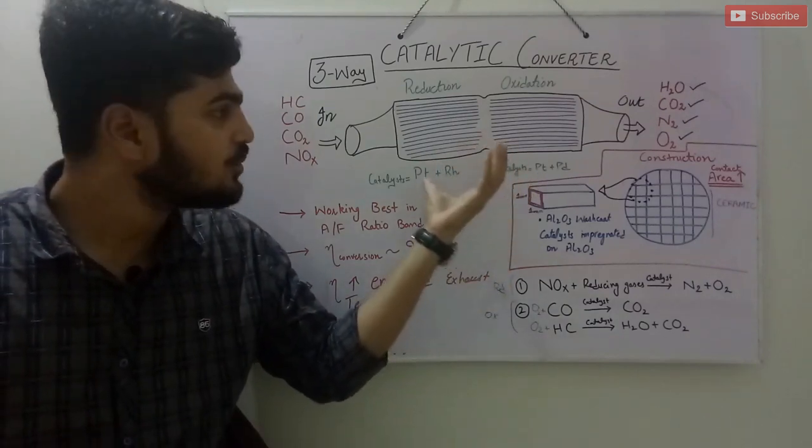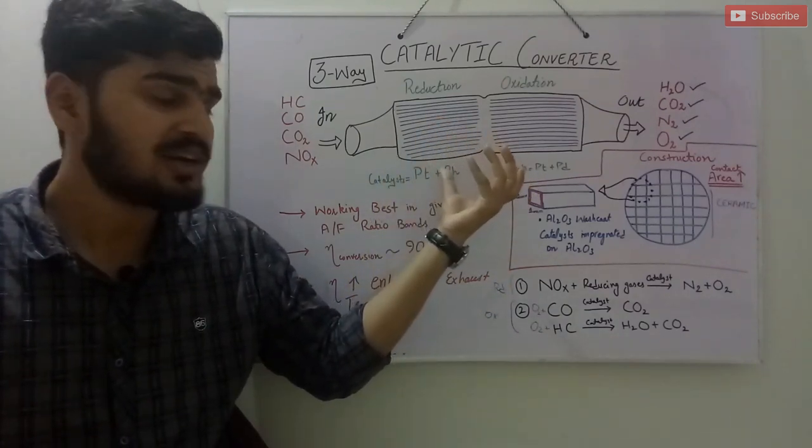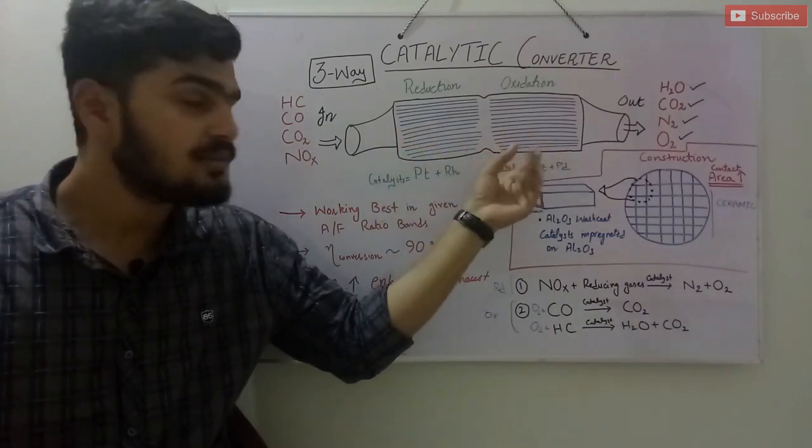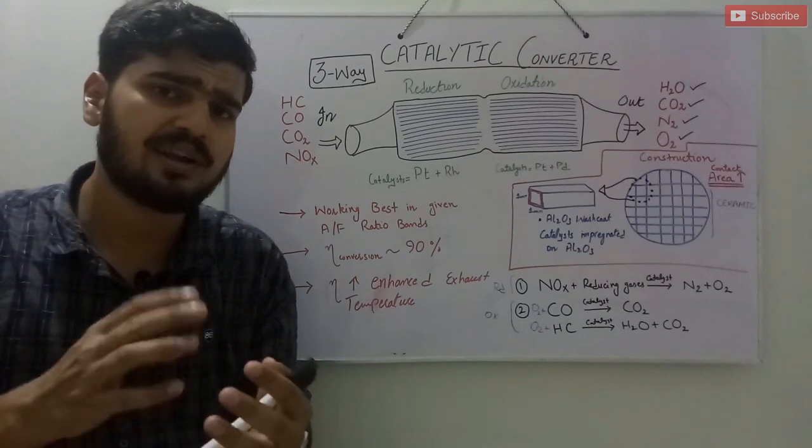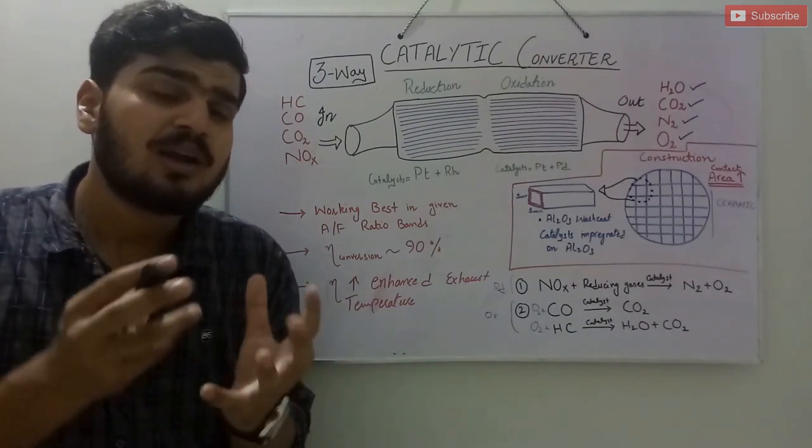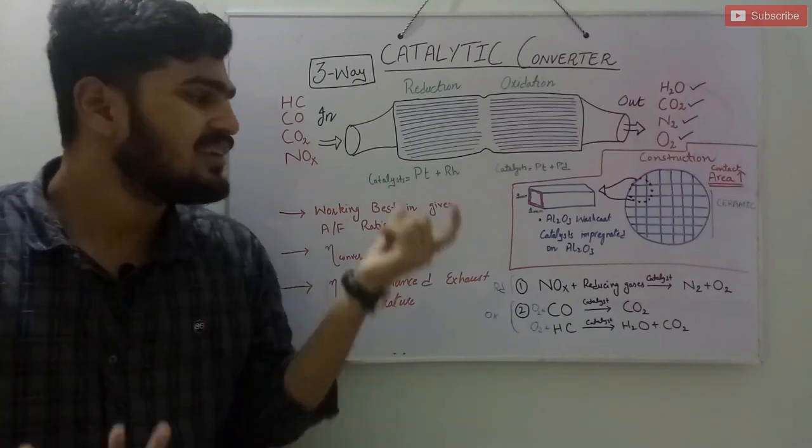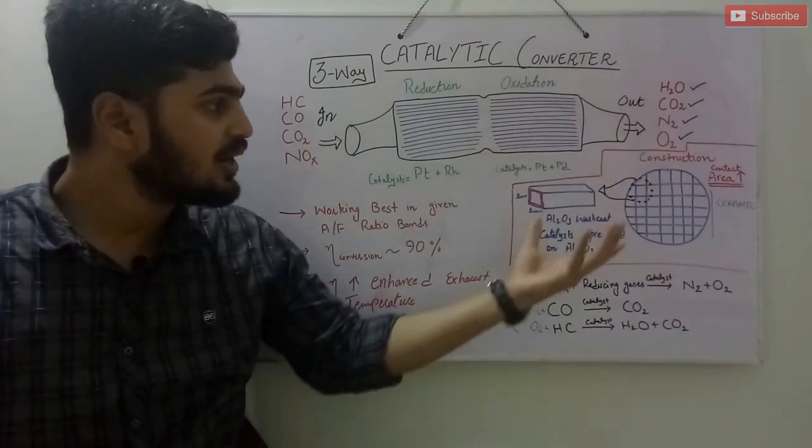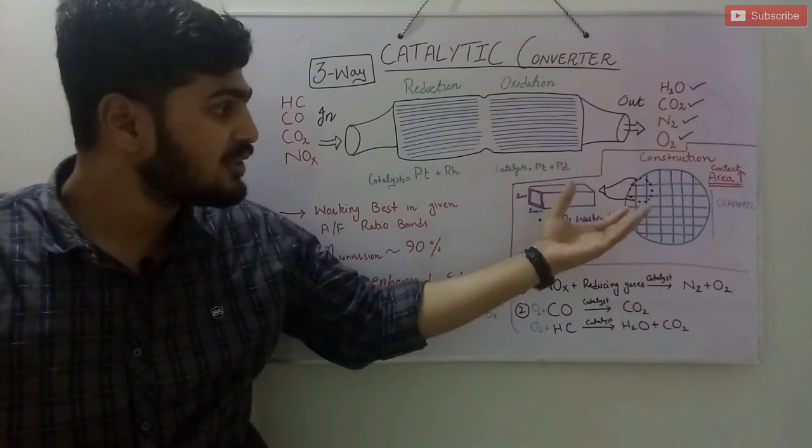Here I have shown the conventional three-way catalytic converter. The first side is the reduction side and the second side is the oxidation side. The catalytic converter is installed in the exhaust system of the automobile to reduce or oxidize the harmful gases into less harmful gases. Let's find out its construction first.